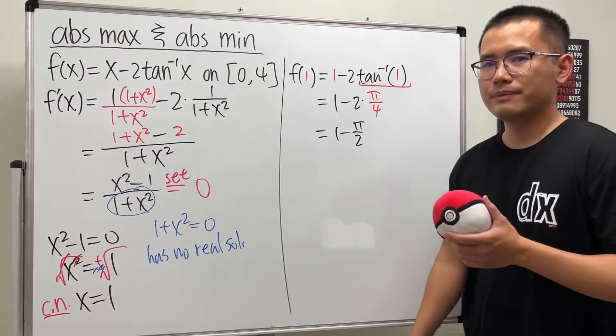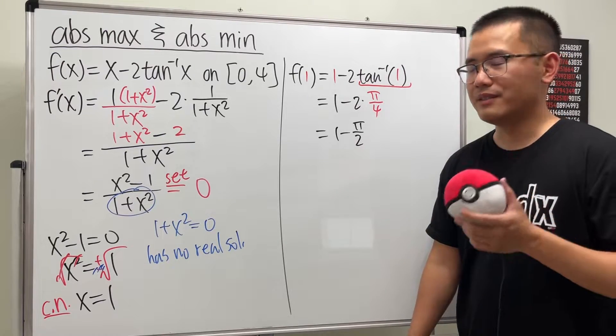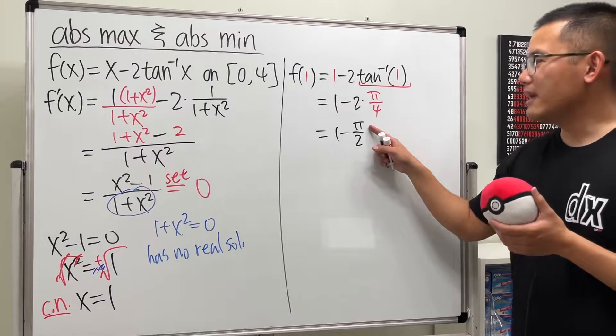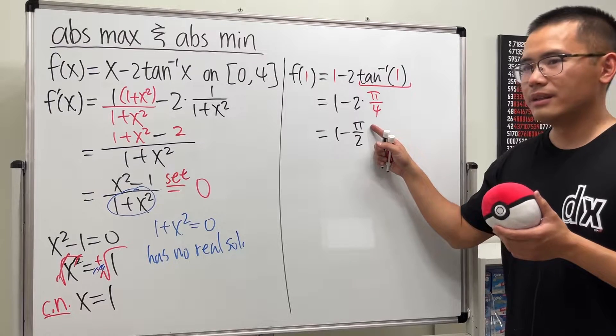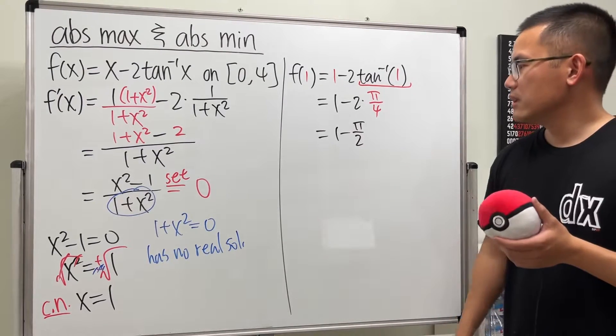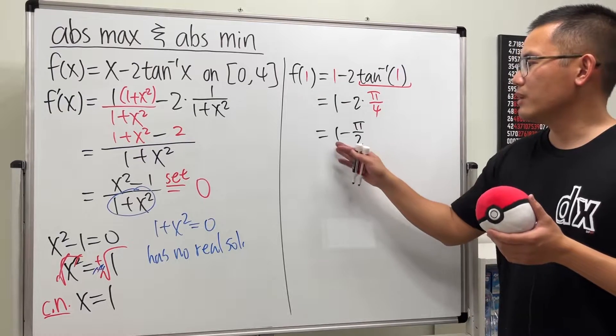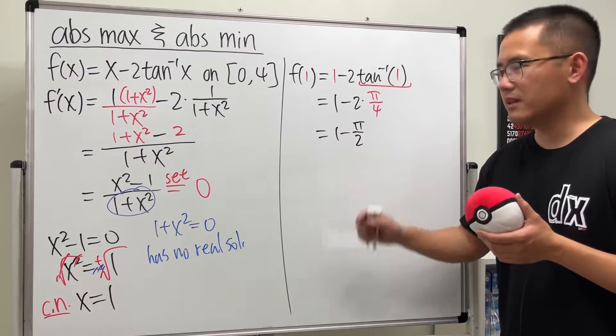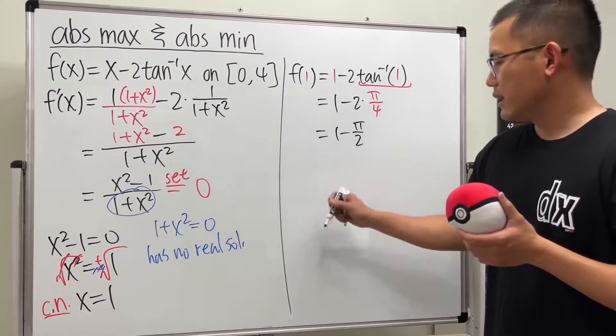Is this positive or negative? Negative. Pi is about 3.14, divided by 2 is 1.5-ish. But anyway, 1 minus that is negative. Keep that in mind.